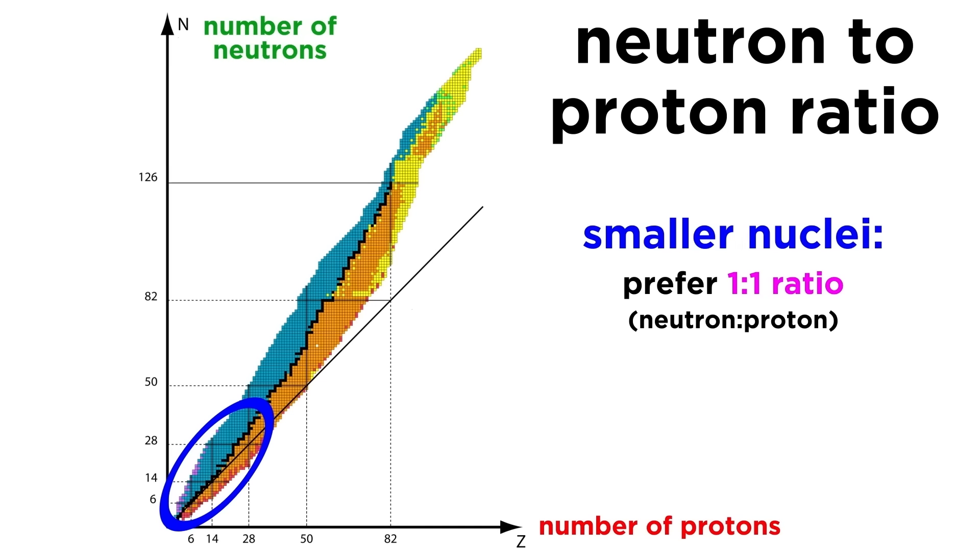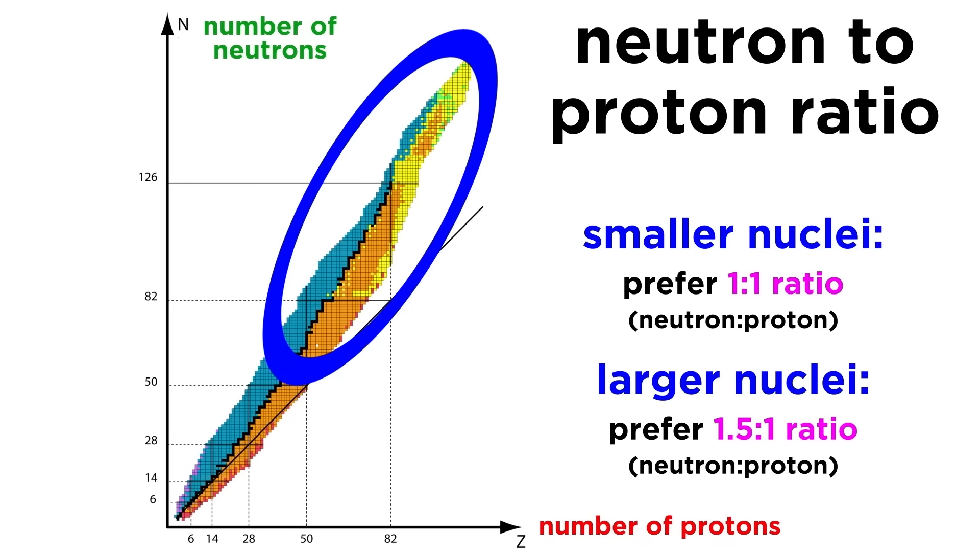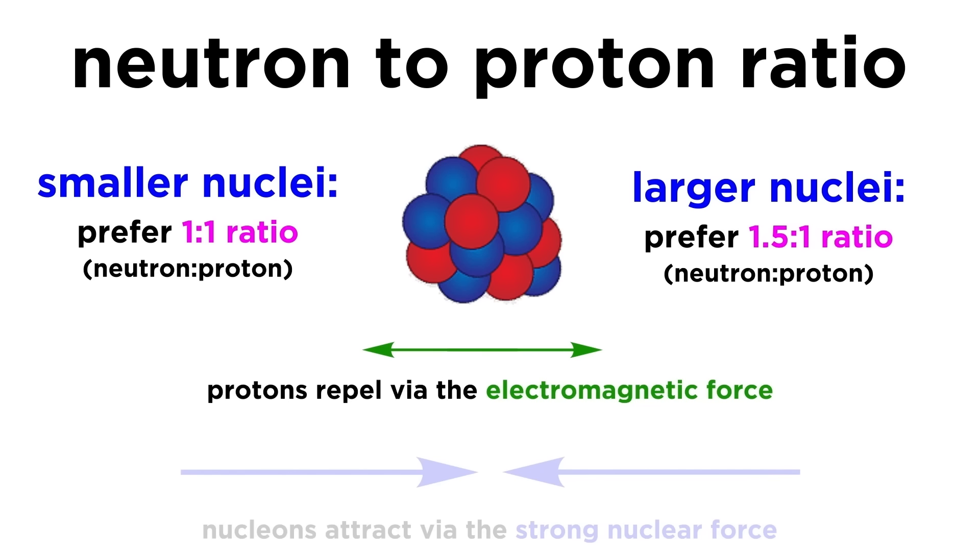It is a roughly linear region that contains all of the stable isotopes. It also reveals a firm preference exhibited by nature to use nuclei that at very low mass show roughly a 1 to 1 ratio, like nitrogen-14 with 7 protons and 7 neutrons. But as the nucleus gets larger, the ratio shifts closer to 1.5 to 1.